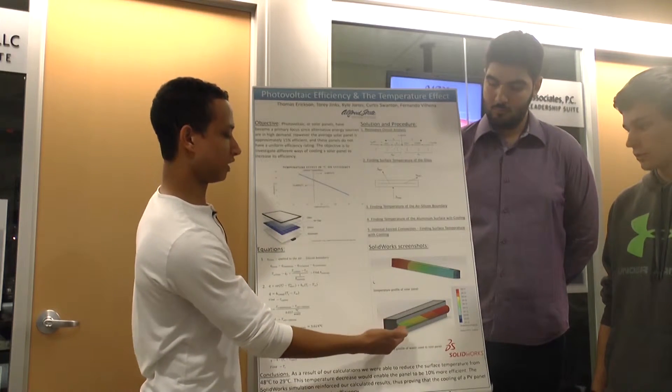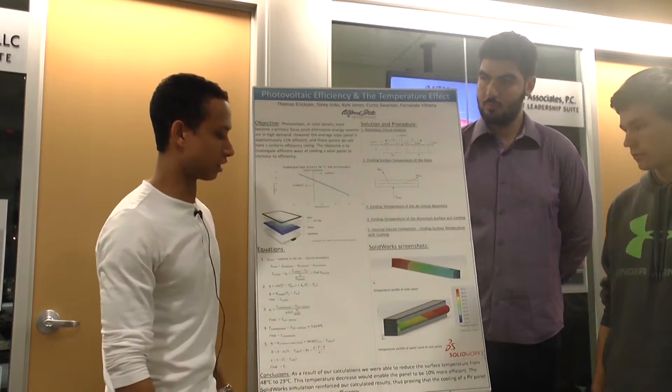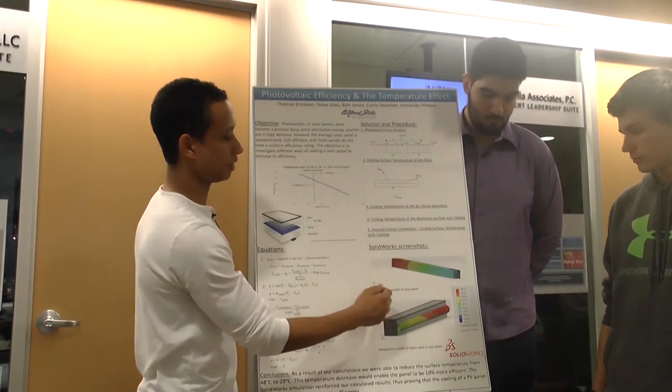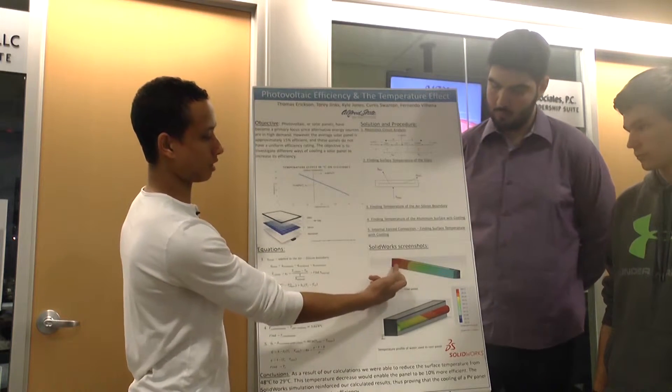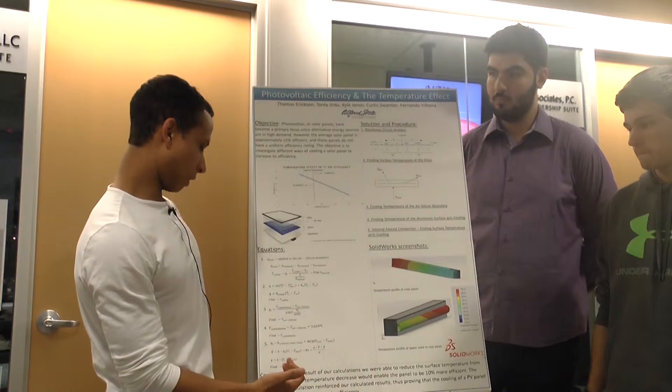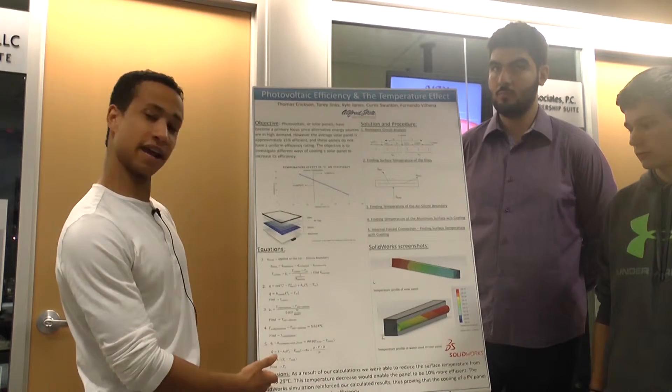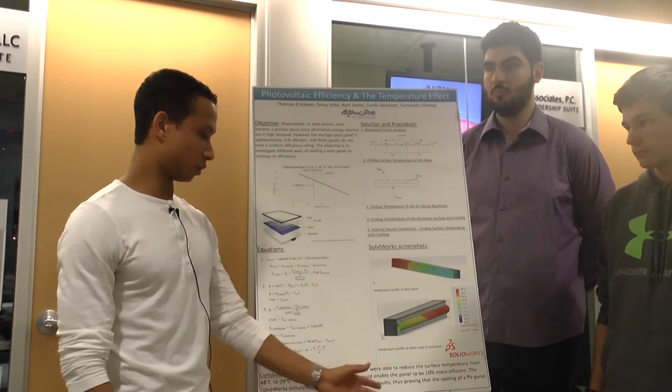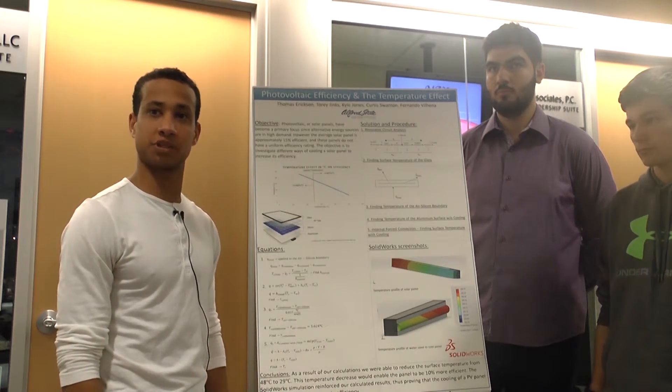So we decided to put liquid underneath the PV panel, and right here you can see temperature going in, temperature coming out, and you can see it cooling the PV panel. And our PV panel started out at 48 degrees Celsius and ended at 29 degrees Celsius, which saved us about 10 percent.